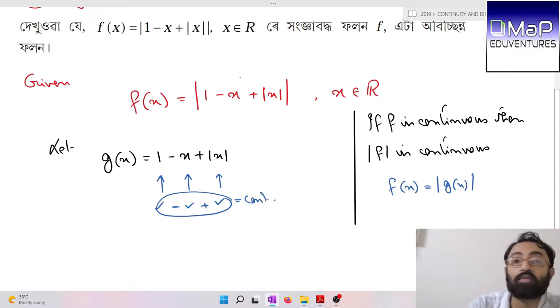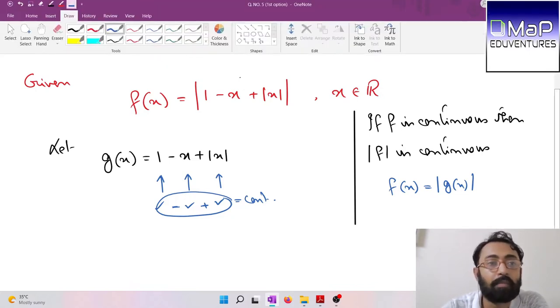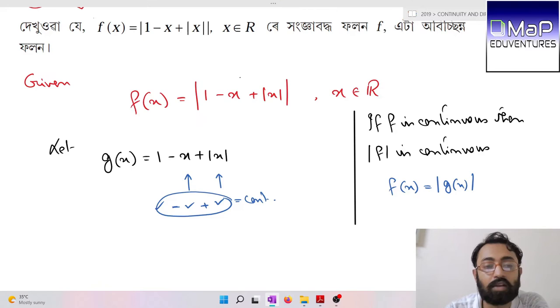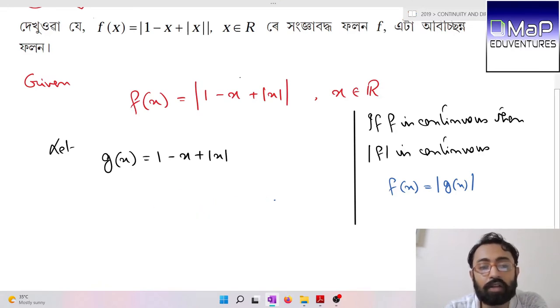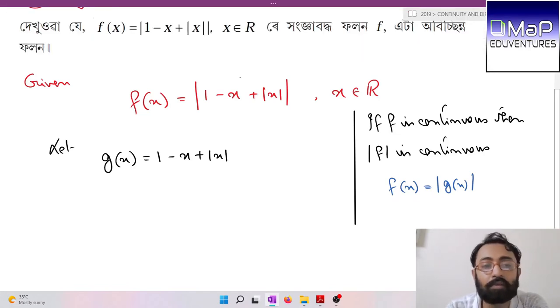We need to check if we can apply this property. Let us concentrate on the g(x) function itself. The g function is continuous. Now with |x| and x, we know that |x| is always greater than or equal to x.